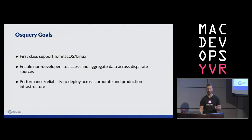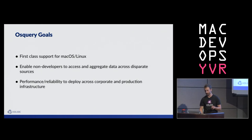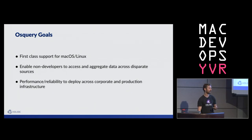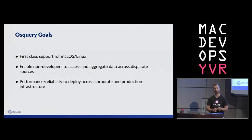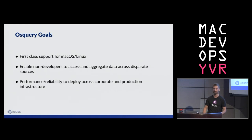We want to enable non-developers to aggregate and analyze data across all these disparate sources — no more writing scripts, just go directly to the data you're interested in. Performance and reliability are a huge focus for the OS Query project. Because of this, OS Query is deployed across millions of production Linux servers and tens to hundreds of thousands of corporate Mac laptops. You'll find if you deploy it, it will work, it will be solid, and you can be among organizations that use it massively.